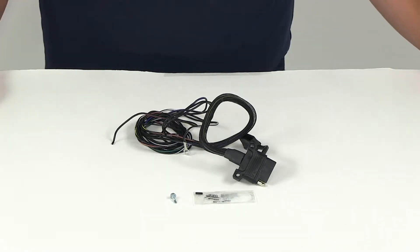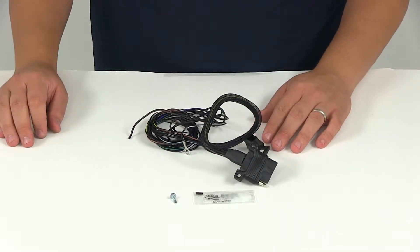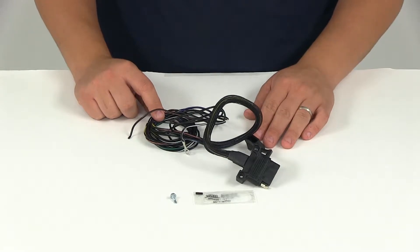Today we'll be reviewing part number HM47900. This is the Hopkins Endurance five-way flat trailer connector for the vehicle end. The five-wire design is common on boat trailers with hydraulic brakes.